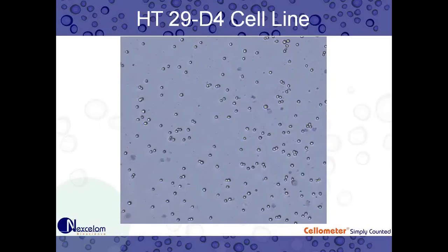Here's our HT29D4, a human clonal cell line derived from colon adenocarcinoma cells, on our Auto1000 software. Again, you can see the similar morphology — a nice round outline on the live cells with a bright center, and then some weaker and darker stained Trypan Blue dead cells.